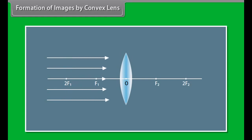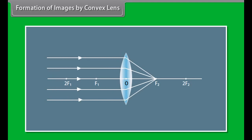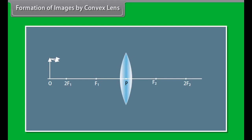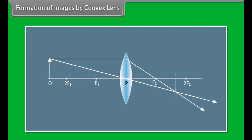Formation of images by convex lens: When the object is at infinity with rays parallel to the principal axis, the image forms at the principal focus on the other side — real, inverted, and diminished. When the object is at infinity with rays not parallel to the principal axis, the image forms at the focal plane on the opposite side — real, inverted, and highly diminished. When the object is placed beyond 2F, the image forms between F and 2F on the opposite side — real, inverted, and diminished.